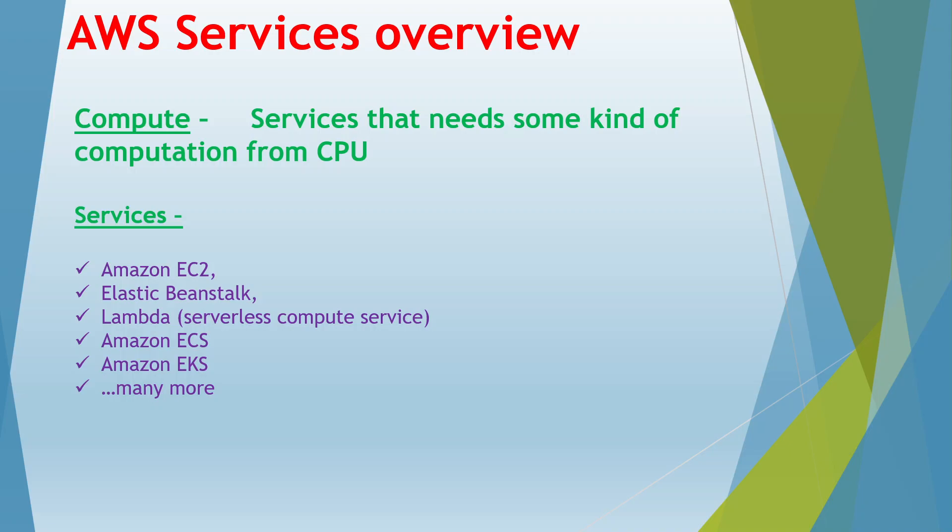Lambda is a serverless compute service — you just deploy the code and the Lambda service takes care of running it in a highly available and scalable mode. Along with that we have Amazon ECS, which is the Elastic Container Service, Amazon EKS, which is a fully managed Kubernetes service, and many more. All these services which need some kind of computation to run your application in the cloud fall under the compute module.